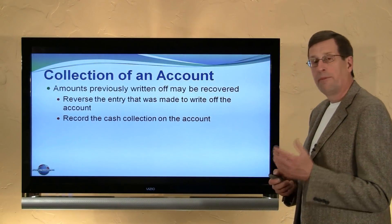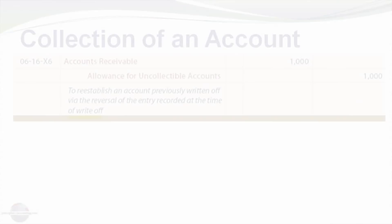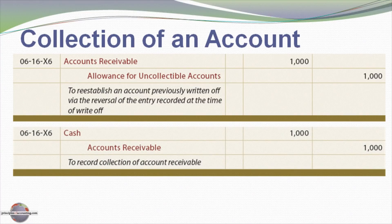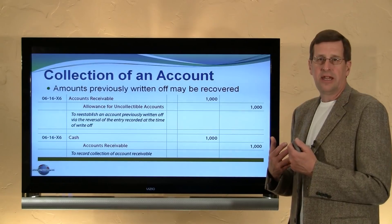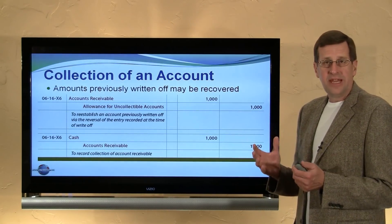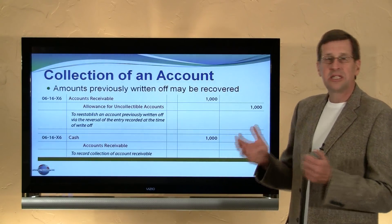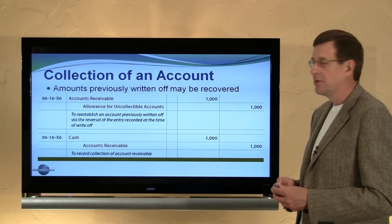When we collect an account that has been previously written off — we might write someone off and then later, unexpectedly, collect the amount — the custom is to reverse the entry that was recorded when the receivable was written off. So we debit accounts receivable and credit the allowance account, which puts the receivable back on the books and reestablishes the allowance account. Then we record the collection of the receivable: debit cash and credit accounts receivable. Some students will ask: you've put an allowance on the books for an amount that's now collected. That's true, but it goes into the aggregate pool of the allowance. At each financial statement date, we should logically review the total balance of the allowance to determine whether our estimates are on target or off target, and potentially make adjustments to get back on track with what we expect our full allowance to eventually prove to be. Thank you.